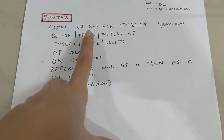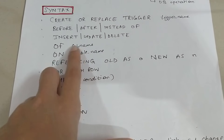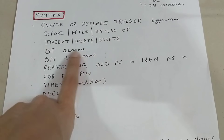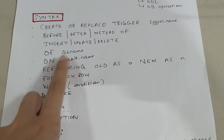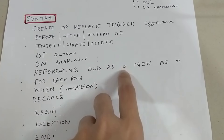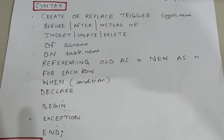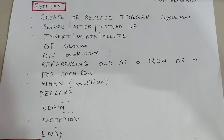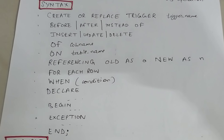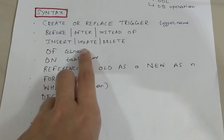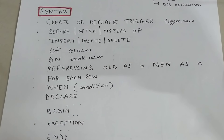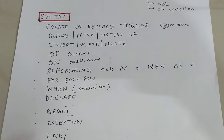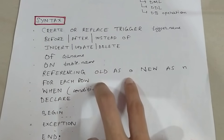You specify BEFORE or AFTER INSERT, UPDATE, or DELETE on a particular table, and optionally of which column — the column name could be name, birth date, or anything like that. Then you use REFERENCING OLD AS o NEW AS n. When you insert a value, there is an old value and a new value. When you update, there is an old value and the new value you are replacing it with, and similarly for delete.